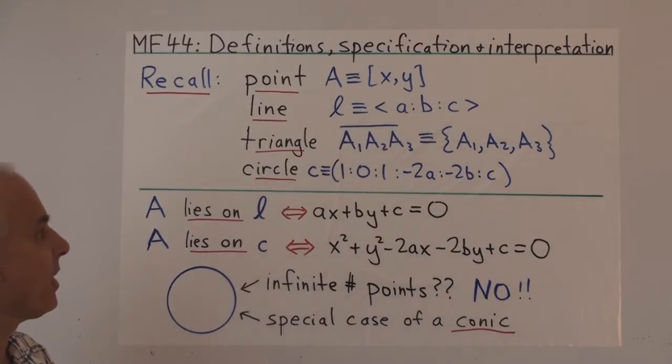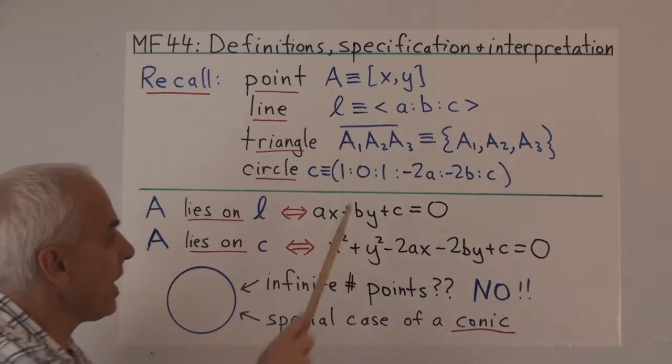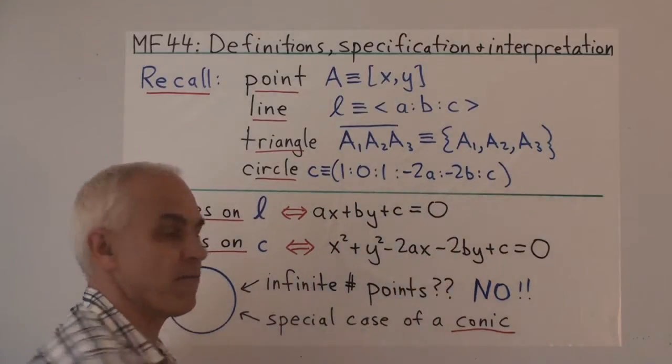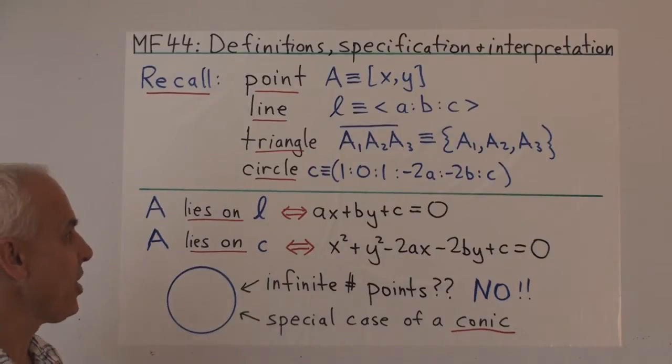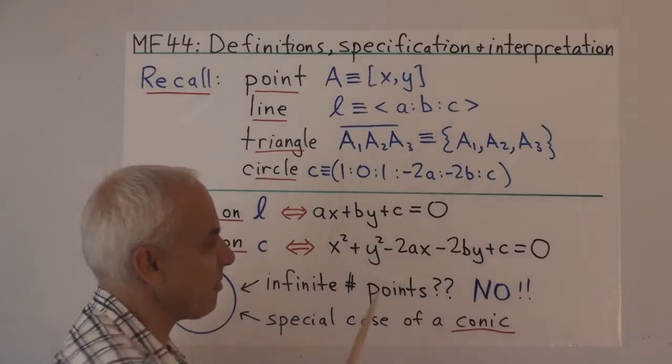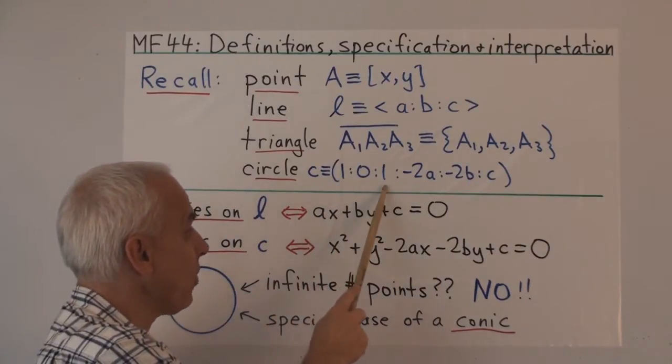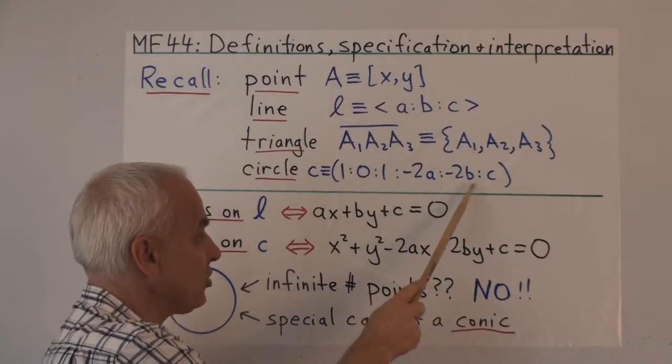We defined a triangle A1, A2, A3 with a bar over it to be a set of three points not collinear. We defined a circle in terms of this proportion involving six numbers, the proportion 1 to 0 to 1 to minus 2A to minus 2B to C.